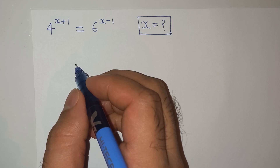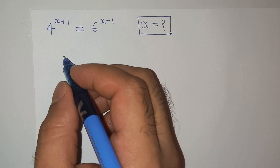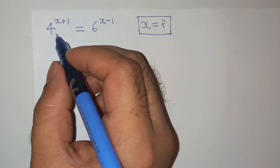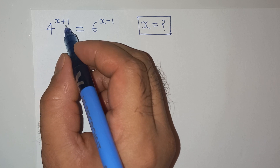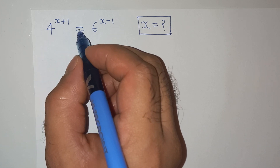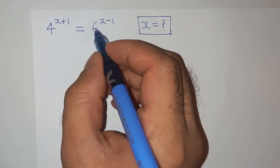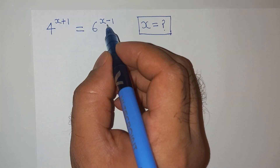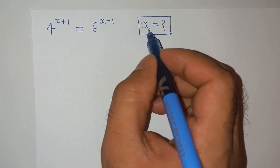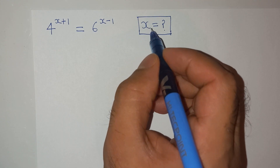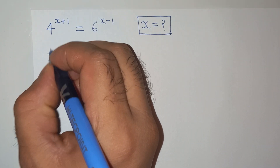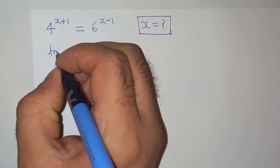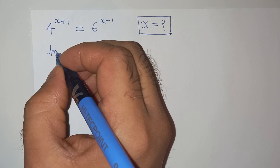Hi guys, welcome back to the channel. I hope you guys are doing well. Today we are going to solve this question: 4 power (x+1) equals 6 power (x-1). We have to find the value of x. To solve this question, I'm going to use logarithm.